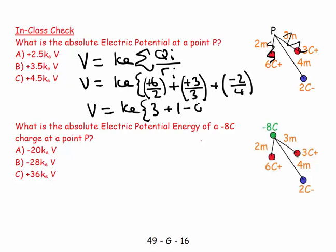So V equals ke times three plus one minus 0.5, which is 3.5 ke volts. That's a positive 3.5 ke volts because the dominating charges were positive charges. That is the potential at that point. Very simple, we just add these up.